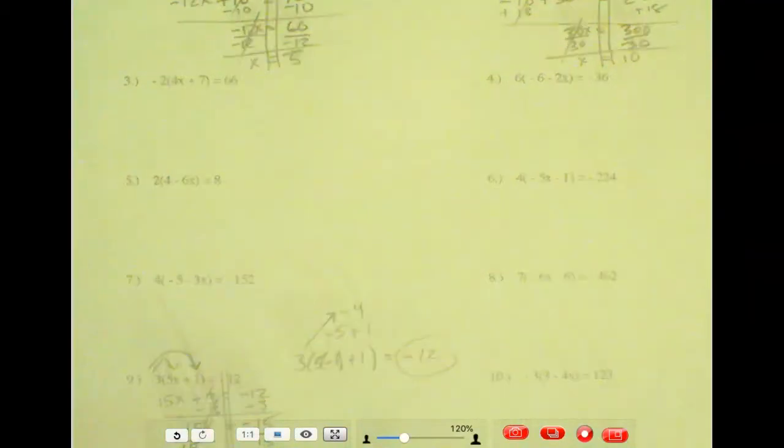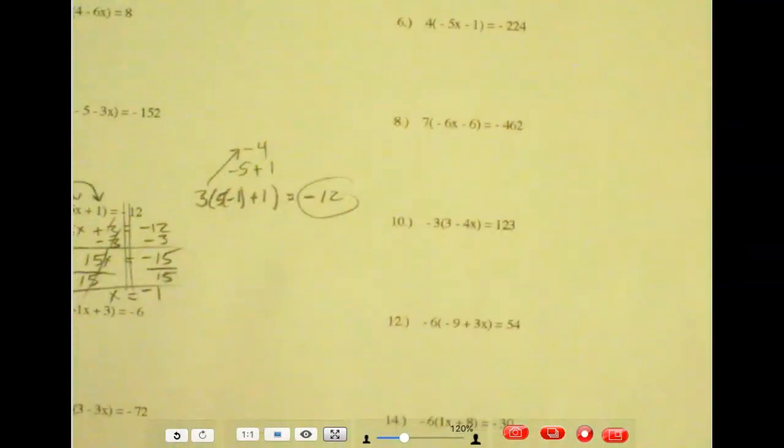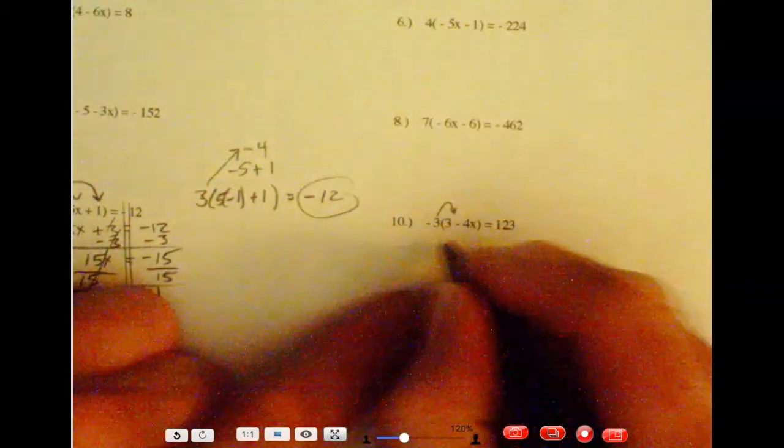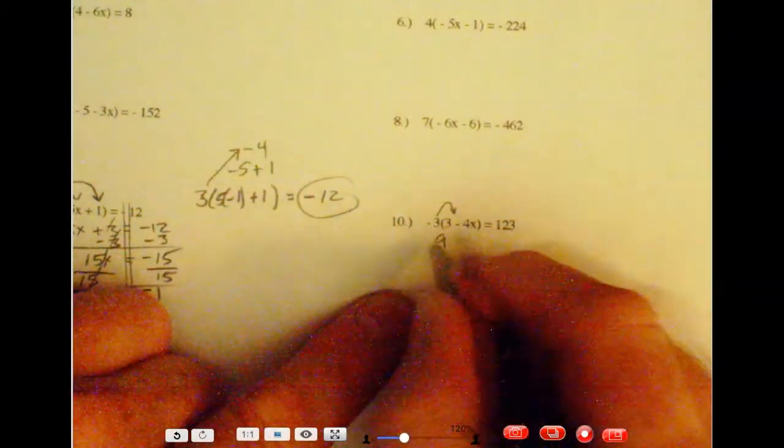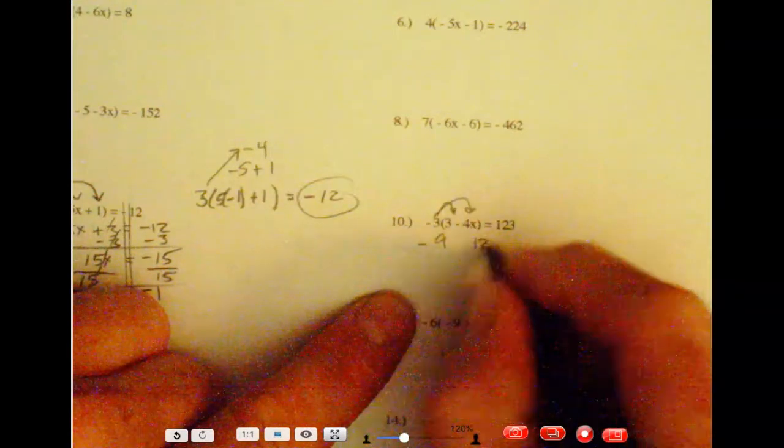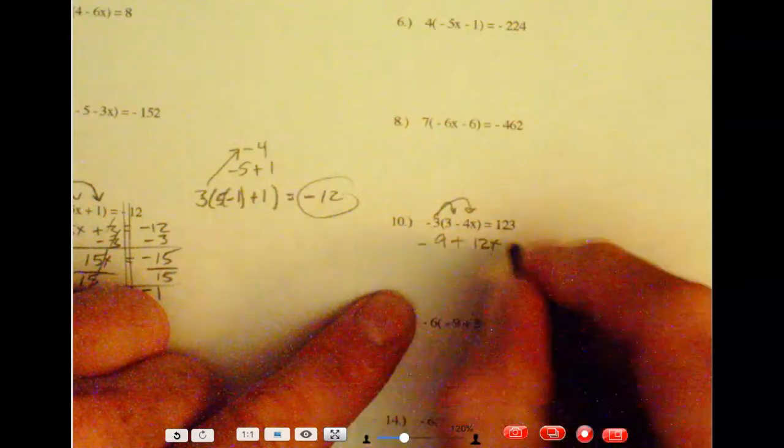All right. I'll do one more. Leave you 16 to do the homework. Let's go right here. Number 10. Well, 3 times 3 is 9. And if the negative times the positive, this is the negative number. 3 times 4 is 12. And it's an x attached. The negative times the negative, so that's a positive 12x. And that equals 123.